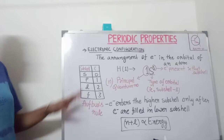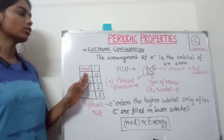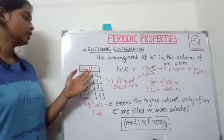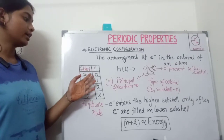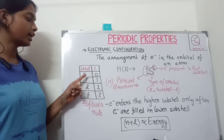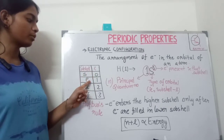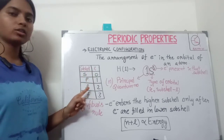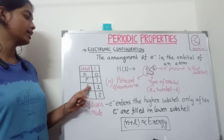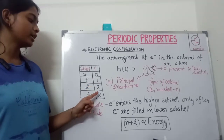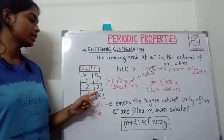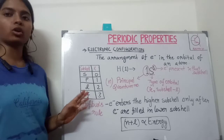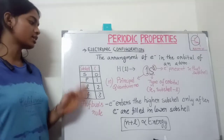The azimuthal quantum number values are already determined: for s it is 0, for p it is 1, for d it is 2, and for f it is 3. So these are the l values for these subshells.